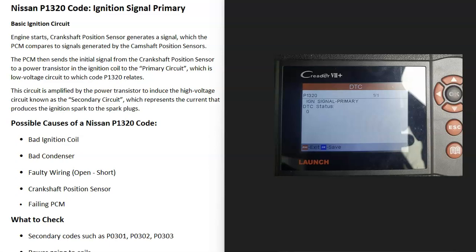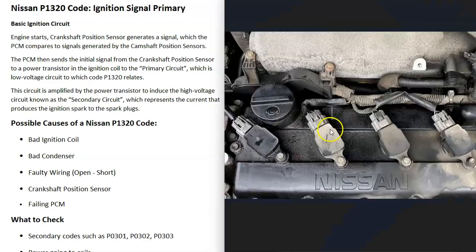Today I'm talking about a Nissan with the P1320 code — what it is and how you go about fixing it. The P1320 is an ignition signal primary code. There are ignition coils on each spark plug on each cylinder, and the onboard computer has seen a problem in one or more of these, either inside the circuit or inside the ignition coil itself. Troubleshooting is required to determine why.